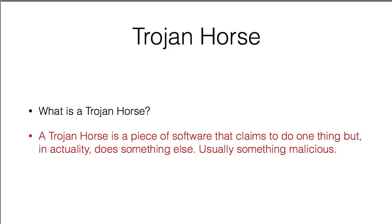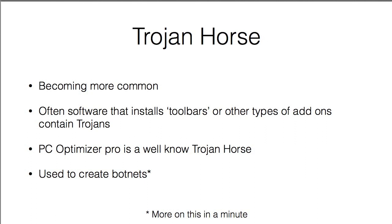A Trojan horse is a piece of software that claims to do one thing but actually does something else — usually something malicious. These are commonly things like browser toolbars. They're becoming more common; stats show they're increasingly the way people's computers get infected. They often install as toolbars or other add-ons. PC Optimizer Pro is a well-known Trojan horse. They are often used to create botnets, which we'll talk about more in a moment.